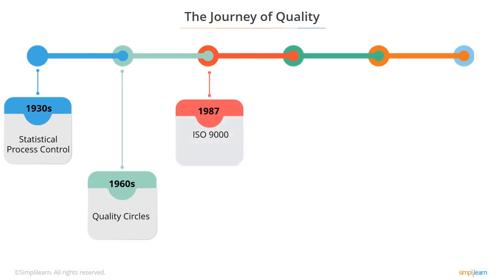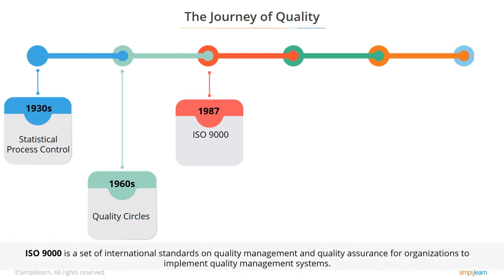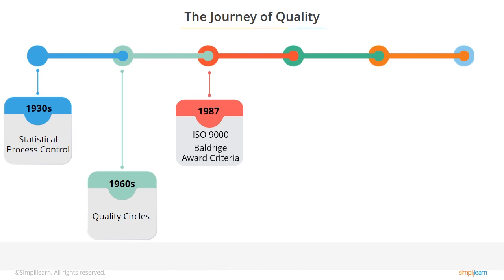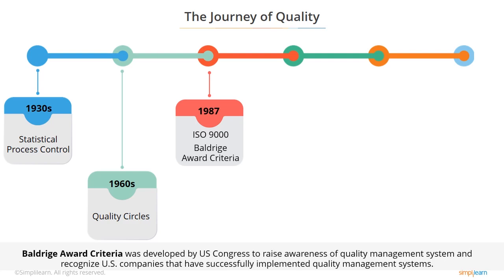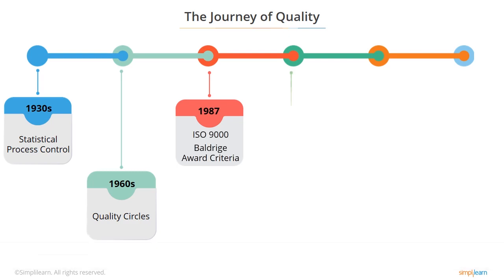In 1987, the International Organization for Standardization designed ISO 9000, a set of international standards on quality management and quality assurance for organizations to implement quality management systems. Also in 1987, the Baldrige Award criteria was developed by US Congress to raise awareness of quality management systems and recognize US companies that have successfully implemented them. In 1988, the concept of benchmarking was introduced.